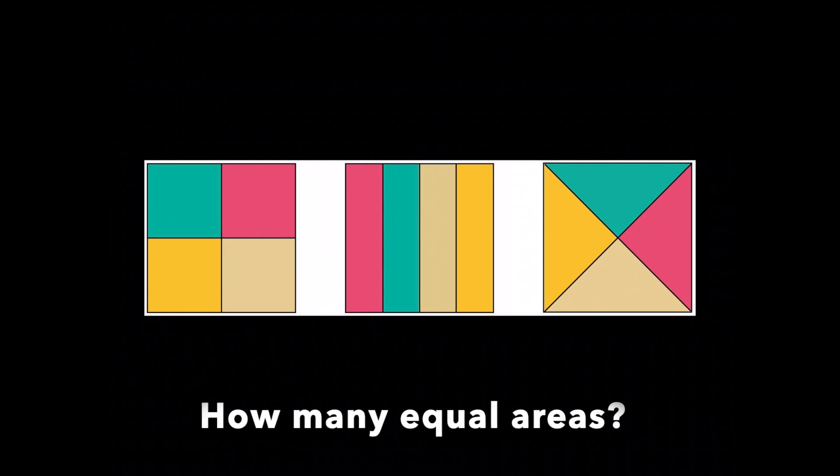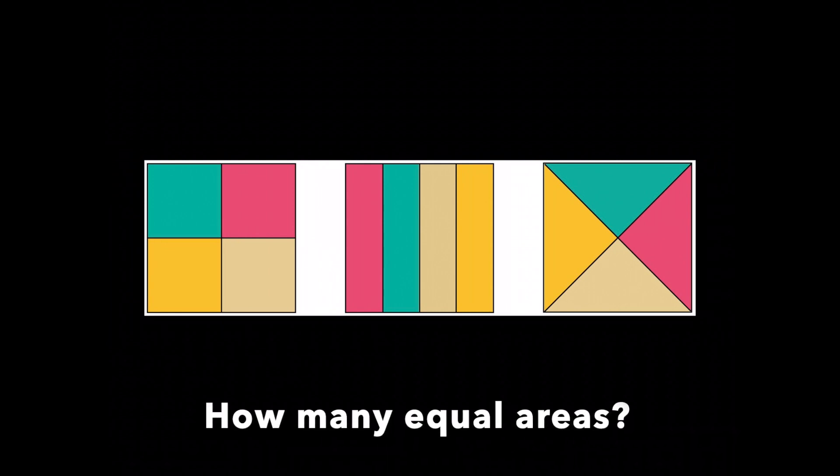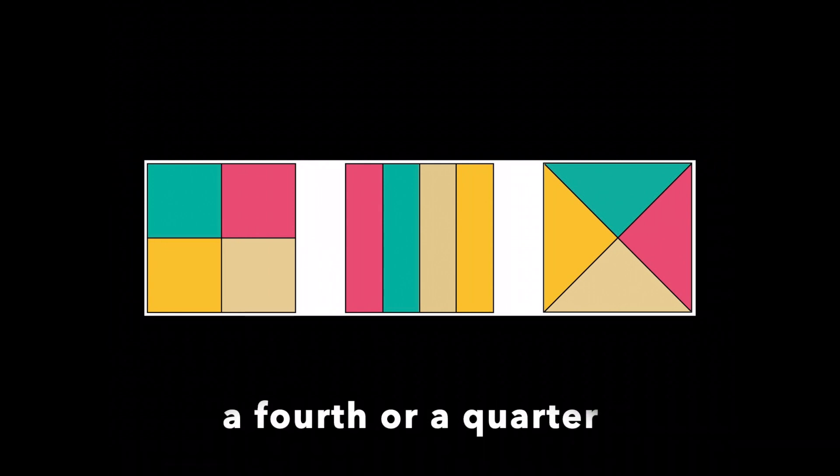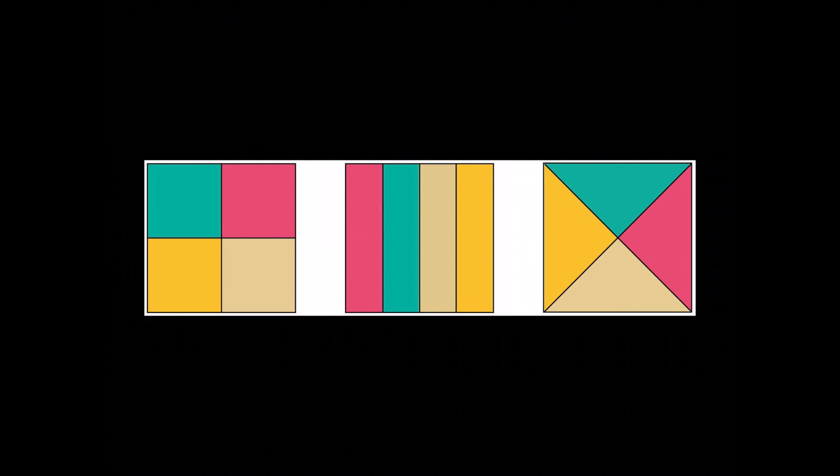So how many equal areas? Four. Each equal area is called a fourth, or a quarter. Each color is one fourth or one quarter of the whole canvas. Fourths and quarters of any whole are the same.